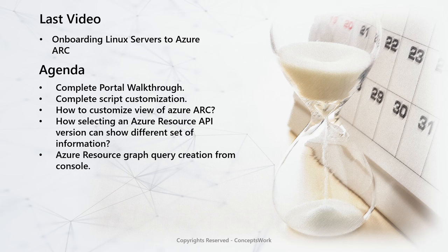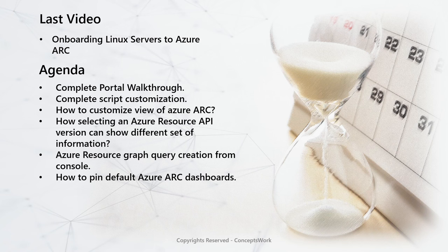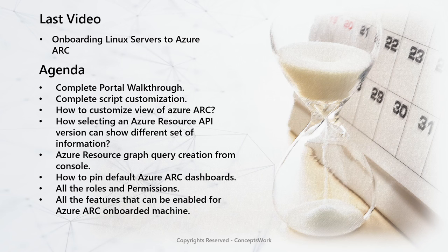We'll also see how selecting a specific version of the Azure Resource API can provide much more detailed information. We're going to see how to add default dashboards of Azure Arc — created through Azure Resource Graph — to our console. This is something available out of the box, and apart from custom queries, certain dashboards are already created for you, making things simpler when you can see data in the form of charts or graphs. Lastly, we'll talk about each and every role and permission required, a detailed view of features available for Azure Arc machines, and the architecture itself.